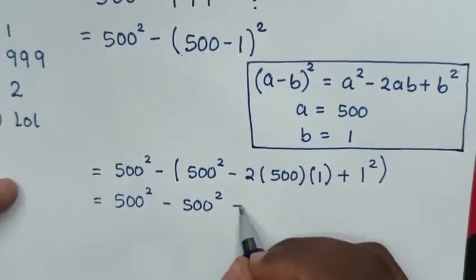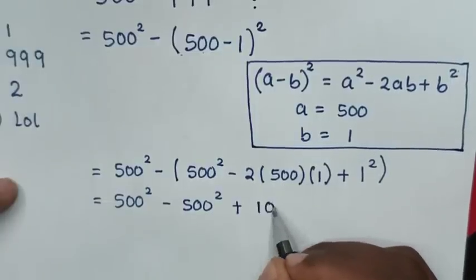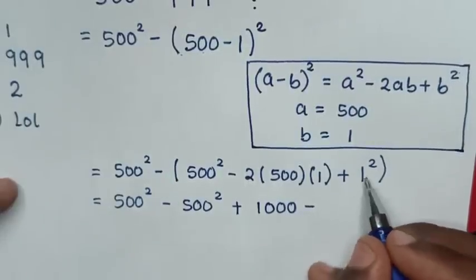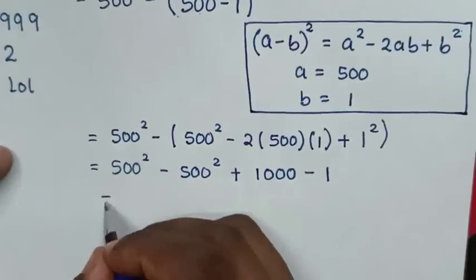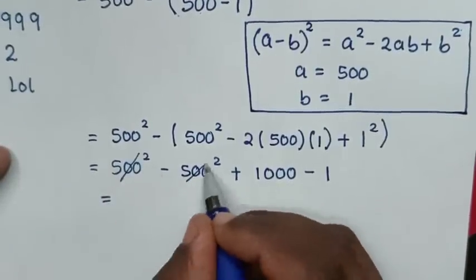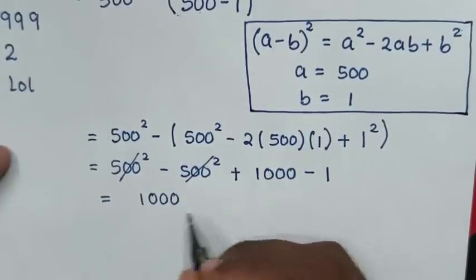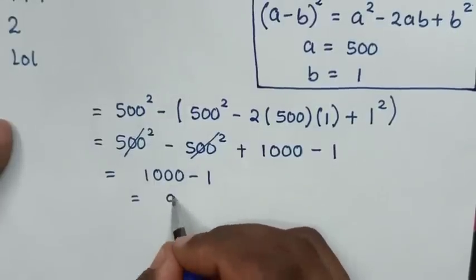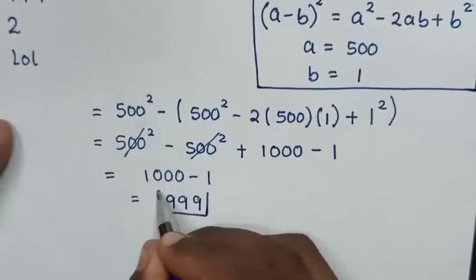Negative and negative to be positive, 2 times 500 times 1 is 1000. Then negative and positive to be negative, 1 square is 1. Then in the next step, it will be equal to this minus this is 0, so this will cancel with this. So it will be 1000 minus 1, which will be equal to 999. So this is our final answer.